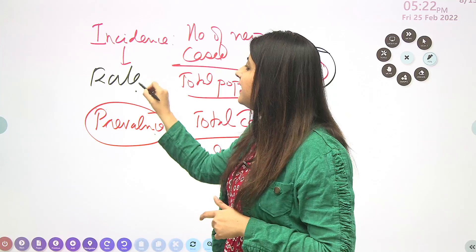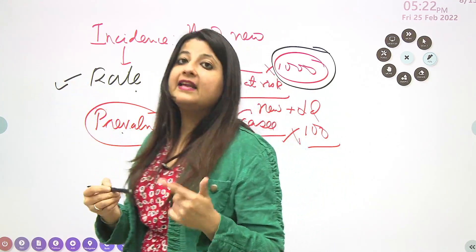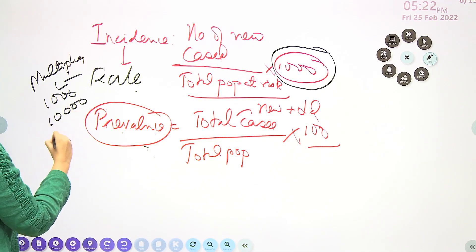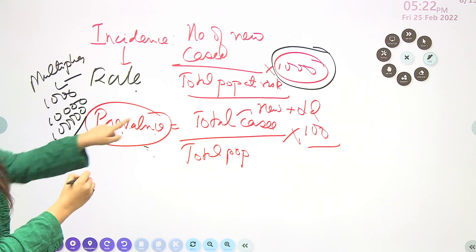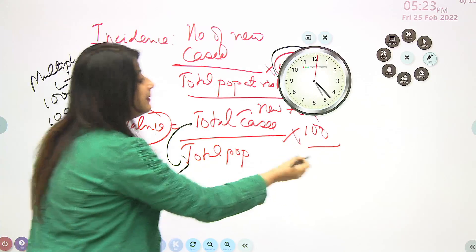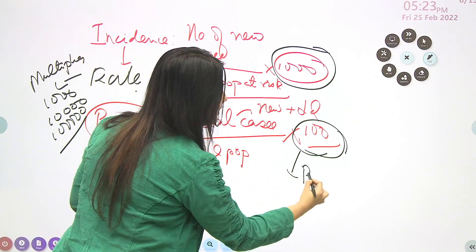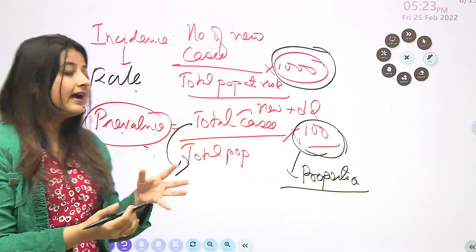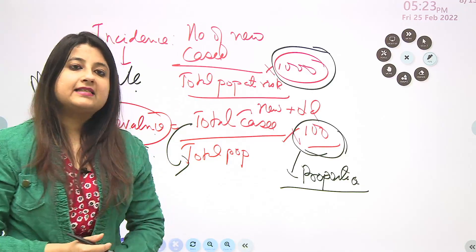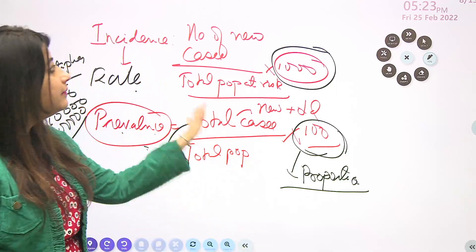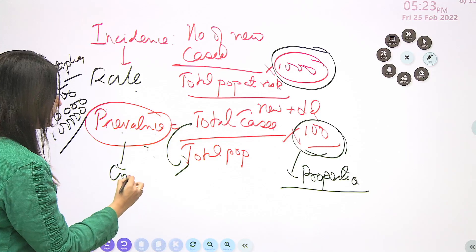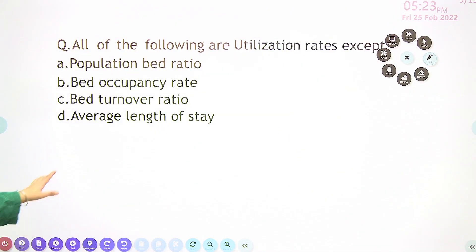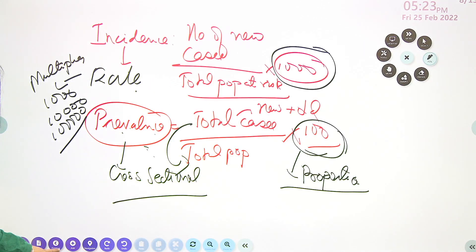Prevalence is total cases — meaning new plus old cases — divided by the total population at that point of time, multiplied by 100. When the multiplier is 100, it is a proportion. So incidence is a rate and prevalence is a proportion. Prevalence is best evaluated by a cross-sectional study design. These are important distinctions for the exam.